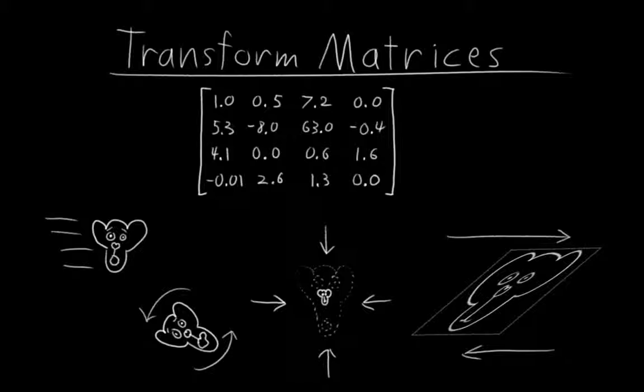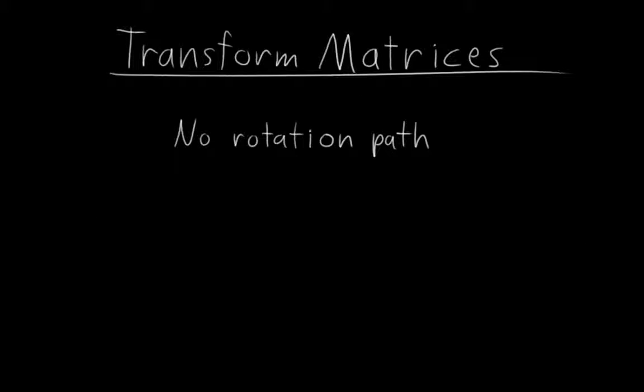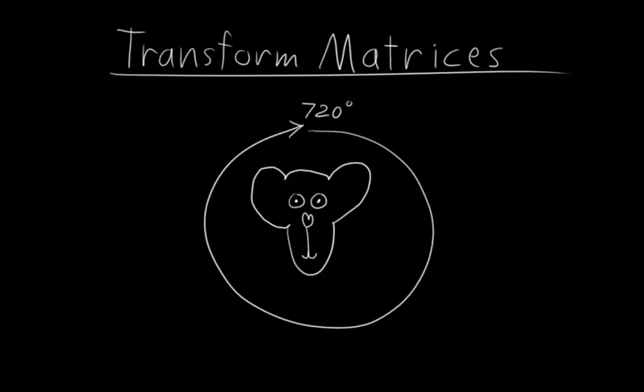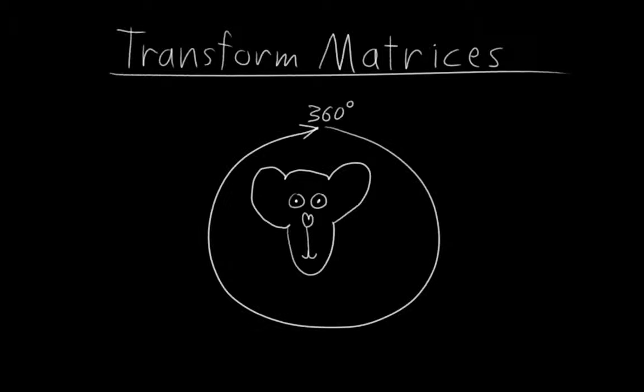However, like quaternions, the rotation part of transform matrices don't have a concept of rotation path. They're much more like rotation deltas. In fact, transform matrices are even more like rotation deltas than quaternions are, because unlike quaternions which cover 720 degrees of rotation, transform matrices only cover 360.